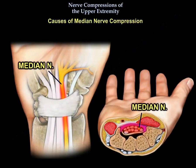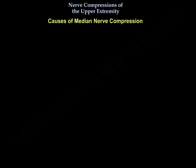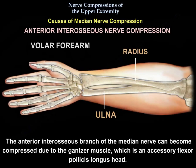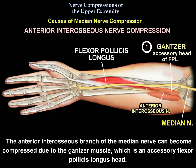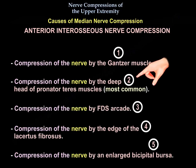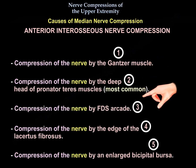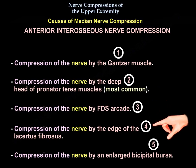For the median nerve, the carpal tunnel involves compression of the median nerve at the wrist by the transverse carpal ligament. The anterior interosseous branch of the median nerve can be compressed due to a Gantzer muscle (accessory flexor pollicis longus head), the deep head of the pronator teres (most common cause), the flexor digitorum superficialis arcade, the edge of the lacertus fibrosus, or an enlarged bicipital bursa.